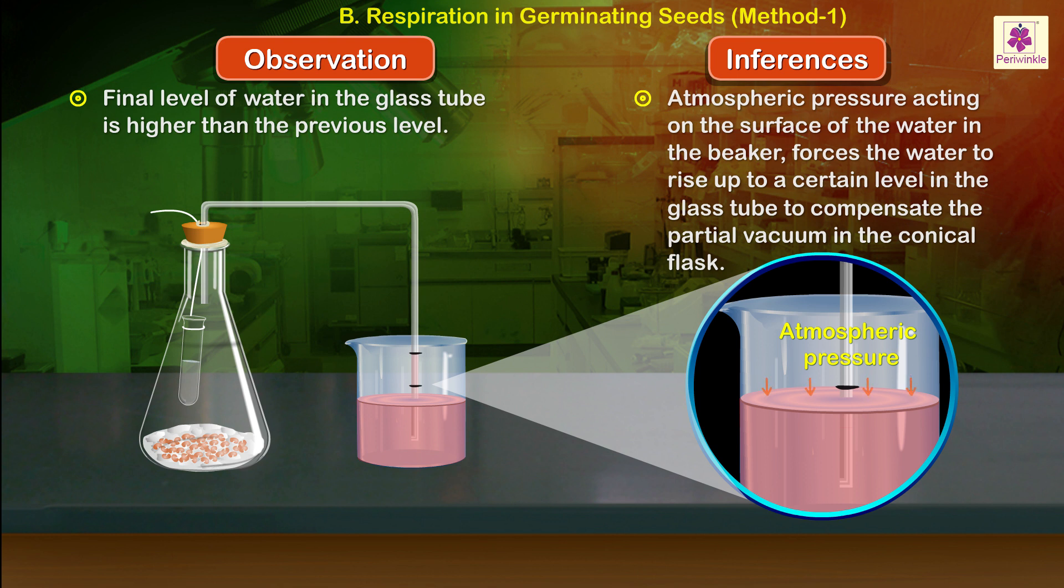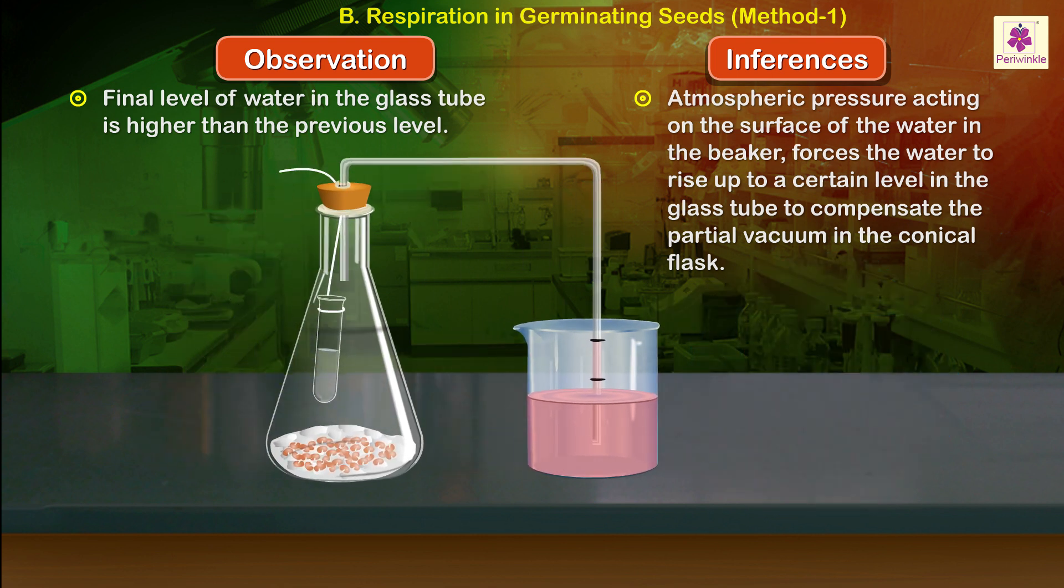Atmospheric pressure acting on the surface of the water in the beaker forces the water to rise up to a certain level in the glass tube to compensate the partial vacuum in the conical flask.